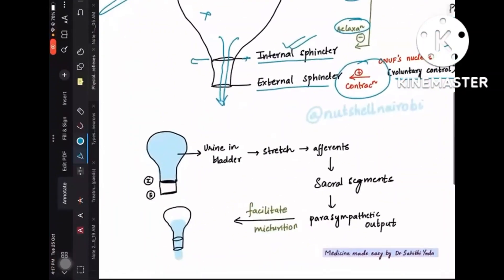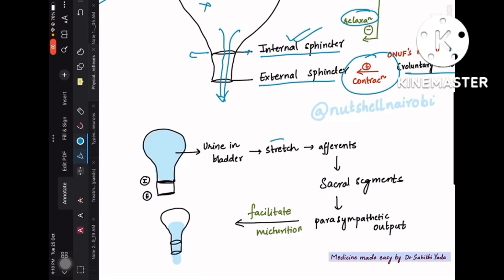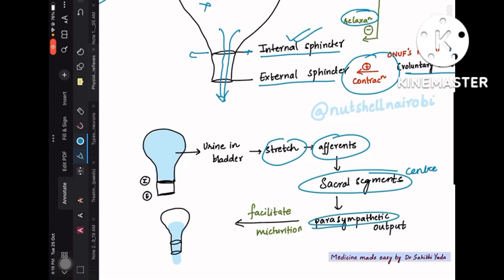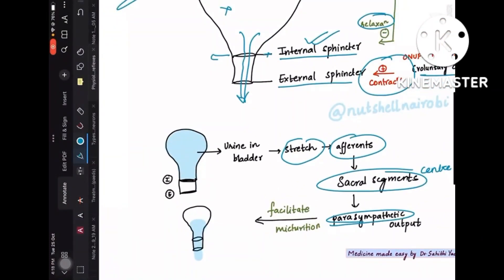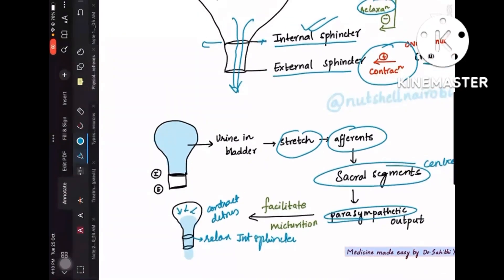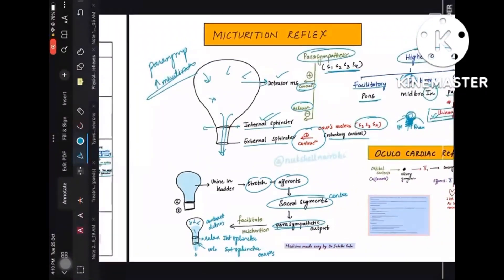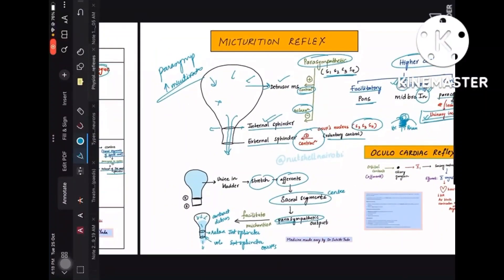For the micturition reflex arc: urine in the bladder causes stretch, afferents carry signals to sacral segments (the center), which send parasympathetic output to contract the detrusor muscle and relax the internal sphincter. Under favorable conditions, the external sphincter is voluntarily relaxed via Onuf's nucleus, and urine is expelled. Micturition and defecation reflexes are similar — one for urine, one for feces.